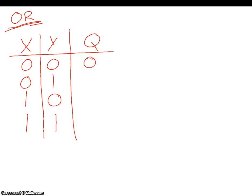In the second instance, X is zero and Y is one — one of those inputs is true, so we get a one for our output. In the third scenario, X is one and Y is zero — one of those is true, so again the output is true. Finally, X is true and Y is true. With the OR gate, as long as one of them is true — it doesn't matter which one, or both — the output will be a one. So with the OR gate, we need one or the other, or both, to be true.